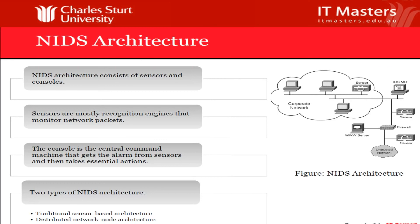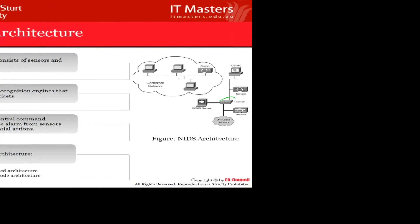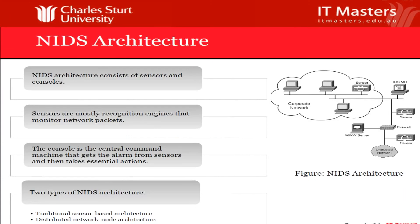There are two types of network-based architecture. One is the traditional sensor-based architecture, where you place sensors in the network — in the firewall and before the firewall — just in case something passes through. The other is the distributed network node architecture, where you place sensors randomly throughout the network.